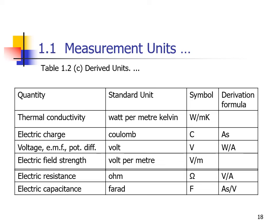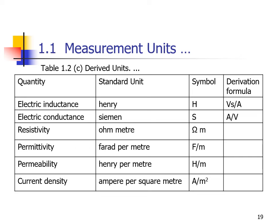Further derived units include: electromotive force and potential difference in Volts, electric field strength in Volts per meter, electric resistance in Ohms, electric capacitance in Farads, electric inductance in Henrys, and resistivity in Ohm-meters.